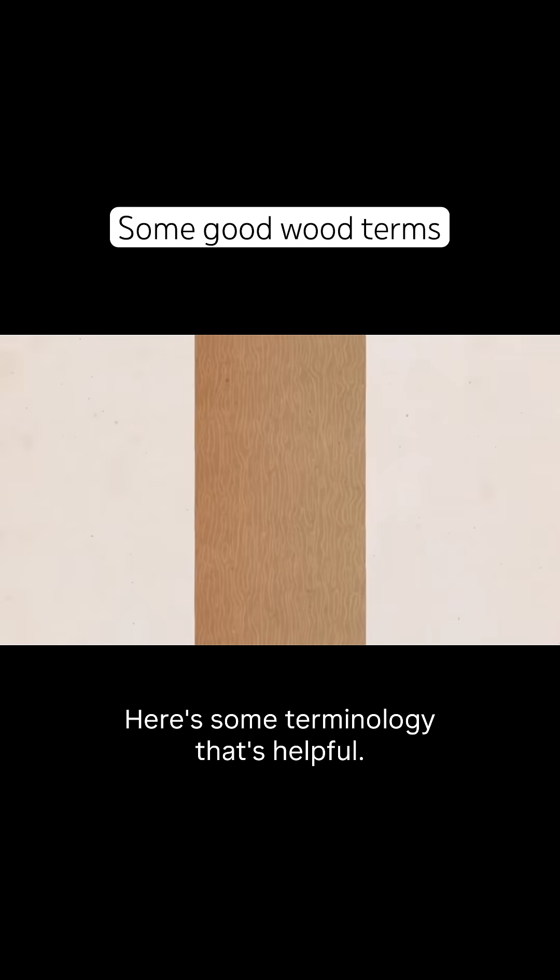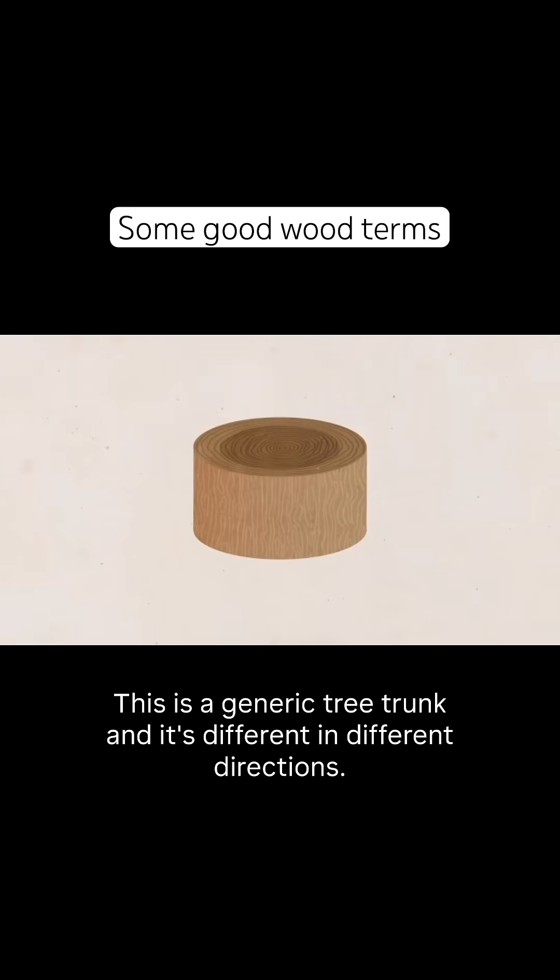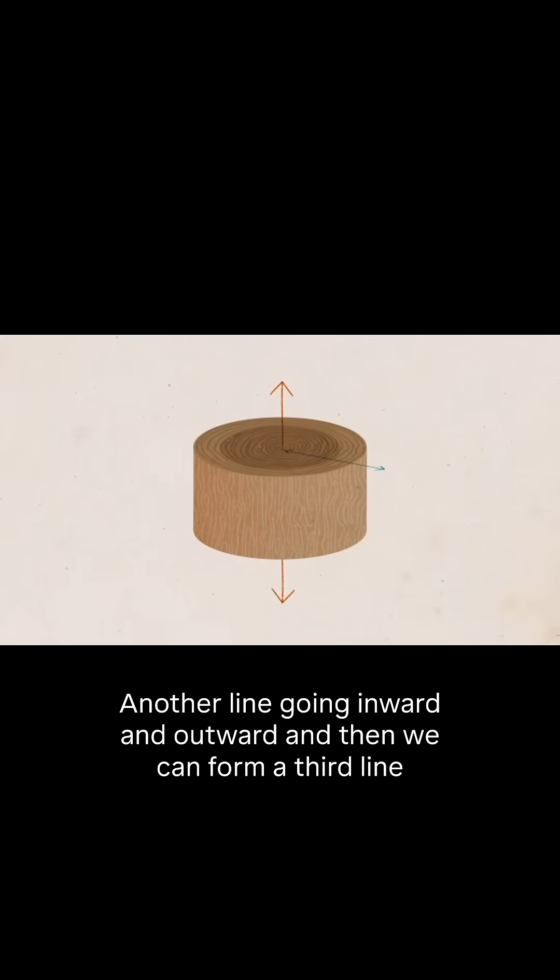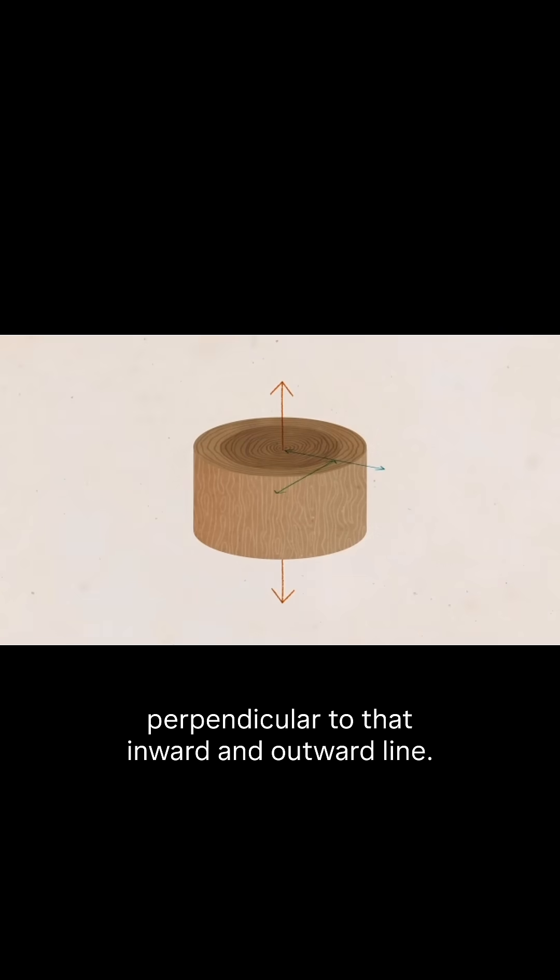Here's some terminology that's helpful. This is a generic tree trunk, and it's different in different directions. We can draw one line going up and down, another line going inward and outward, and then we can form a third line perpendicular to that inward and outward line.